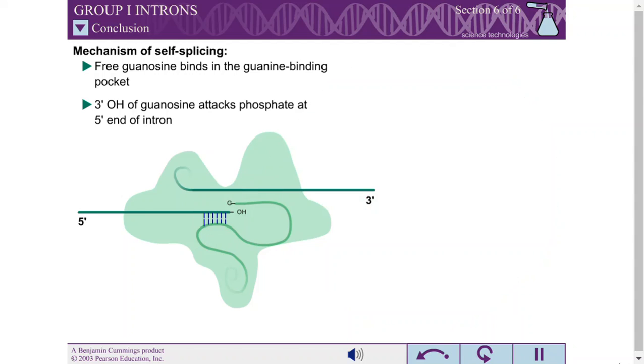The freed 3' hydroxyl of the exon attacks a phosphate at the 5' end of the other exon, fusing the two exons and releasing the intron.